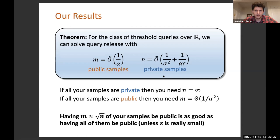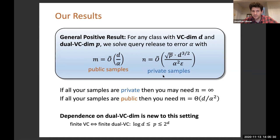We also have a much more general theorem that applies for arbitrary classes of linear queries. It has a somewhat more complicated statement. For any class of queries with bounded VC dimension, there is a private algorithm that uses only a small fraction of public samples. The number of private samples we need depends on a quantity that doesn't really come up elsewhere in privacy called the dual VC dimension.